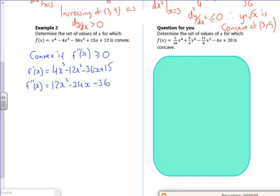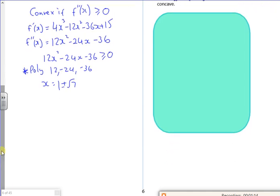Right, I need to see where that is greater than or equal to 0. So 12x squared, 24x minus 36, greater than or equal to 0. If I stick that in poly, so 12 minus 24 and minus 36, I should get out x is 1 plus or minus root 7, according to the completed pack.